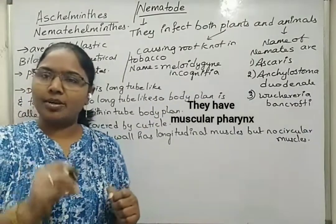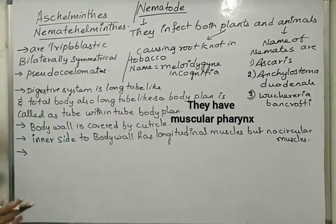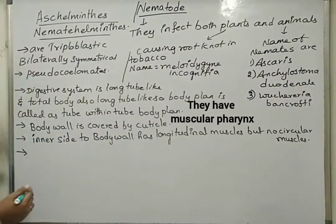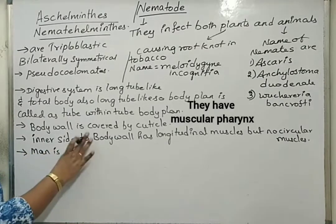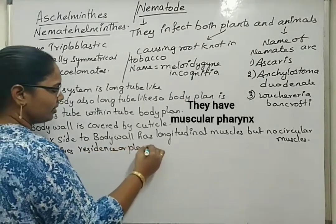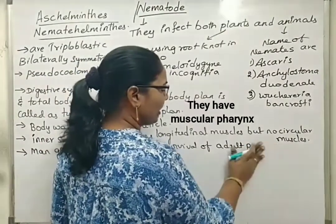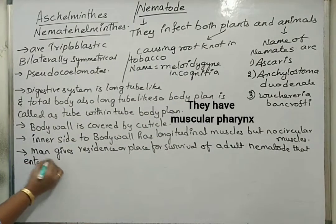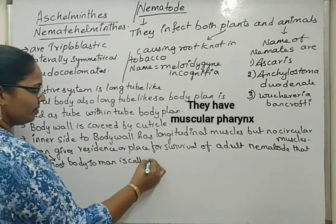In the case of nematodes, the adult organism or adult parasite enters into the host. In the case of Ascaris, it enters the human body in adult form. The host that provides accommodation for the adult organism is called the definitive host. Man is therefore called the definitive host.